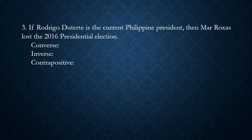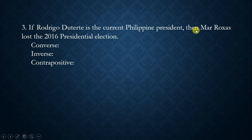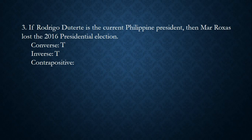Number three: if Rodrigo Duterte is the current Philippine president, then Marujas lost the 2016 presidential election. Observe that P is true and Q is true. Therefore the converse is true, the inverse is true, and the contrapositive is false.